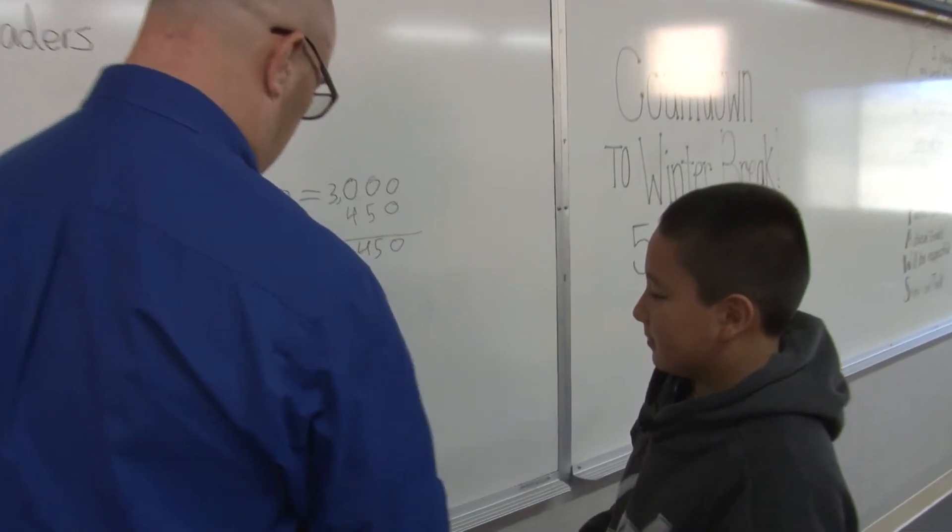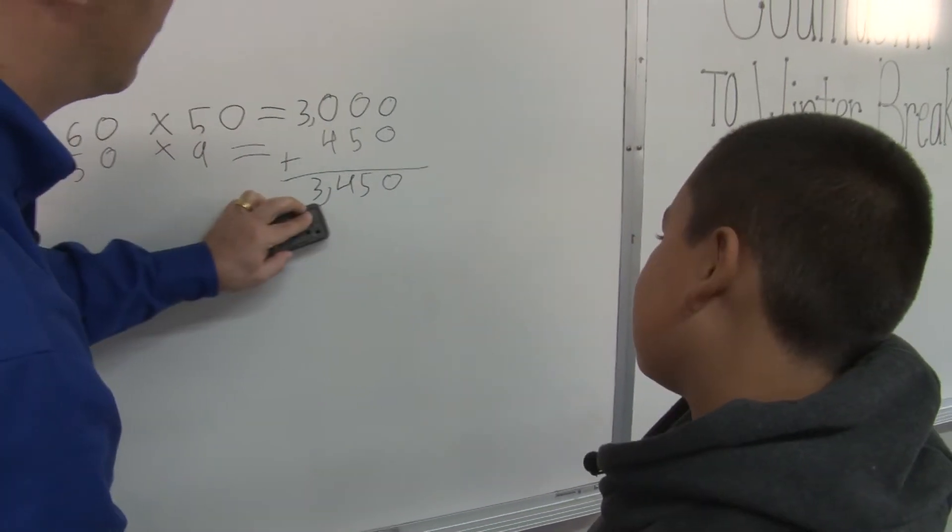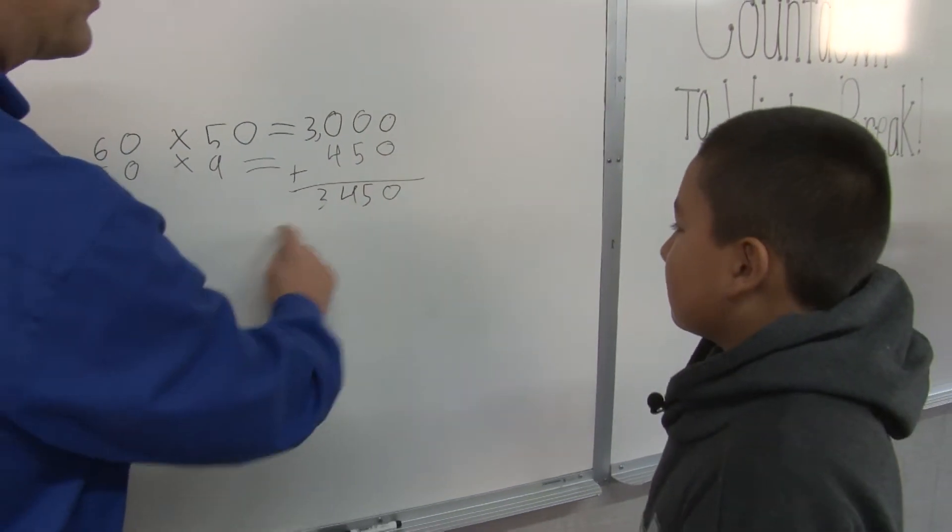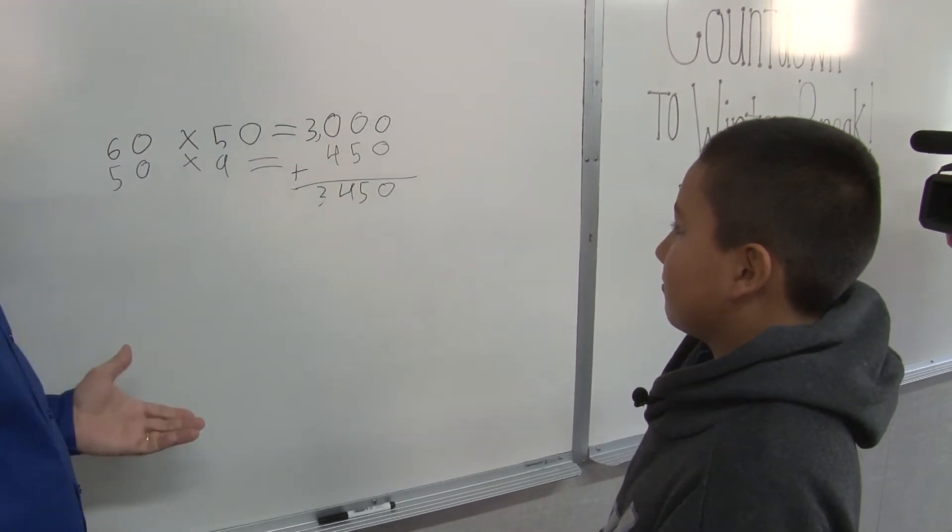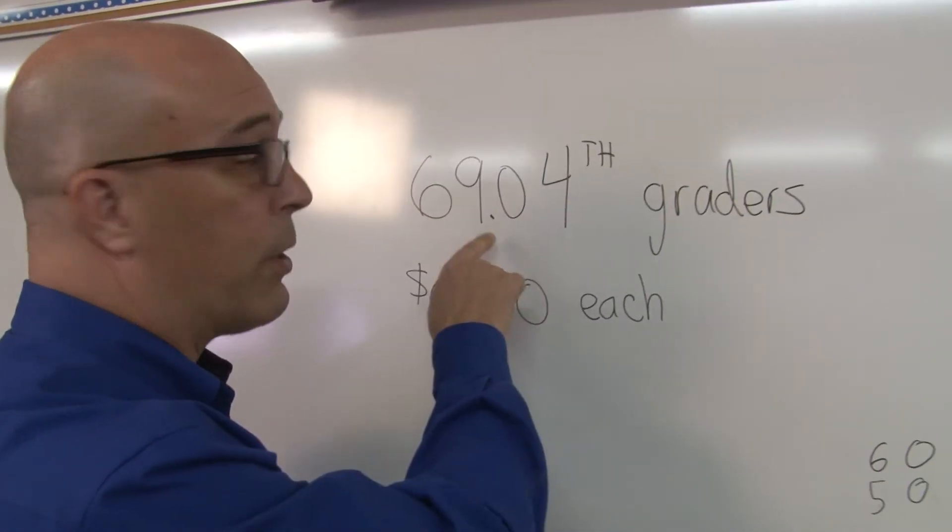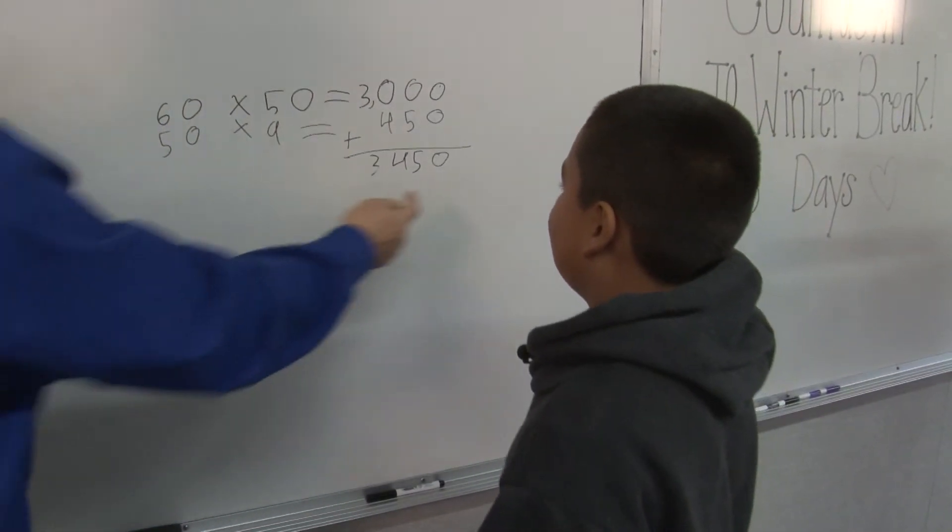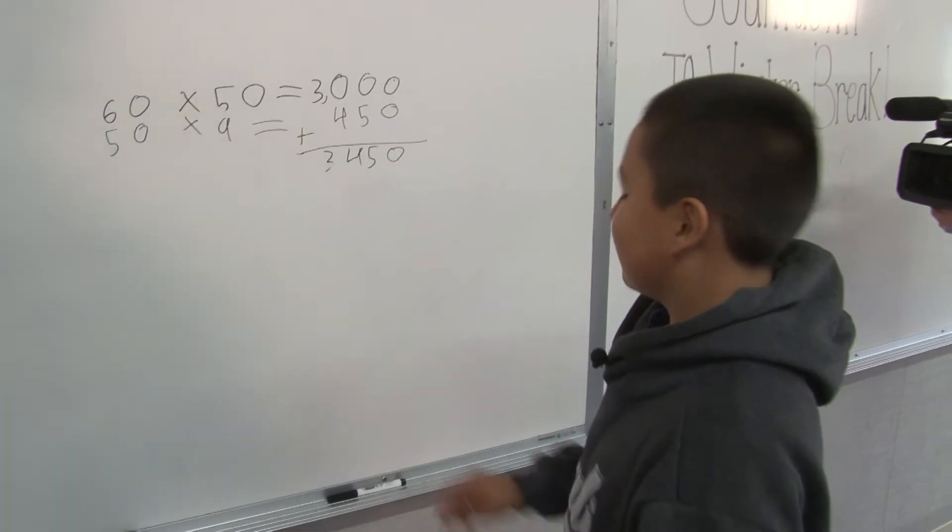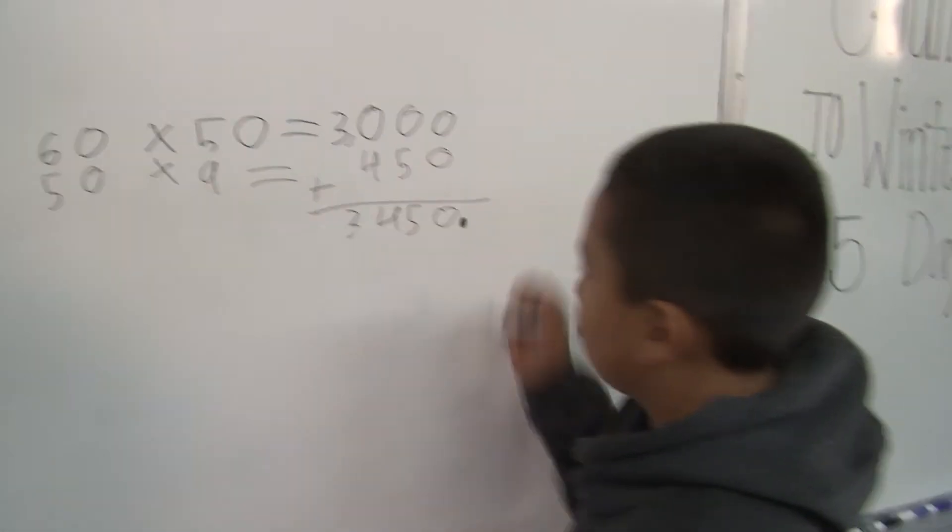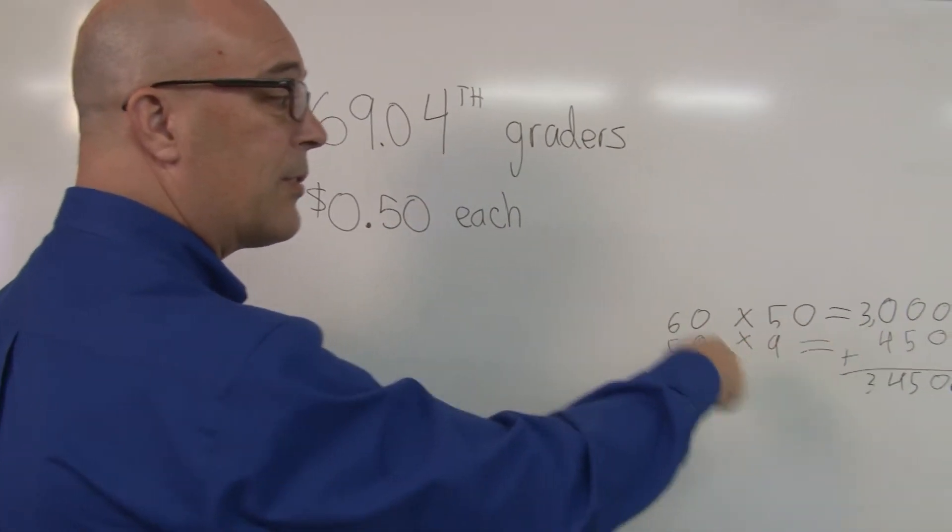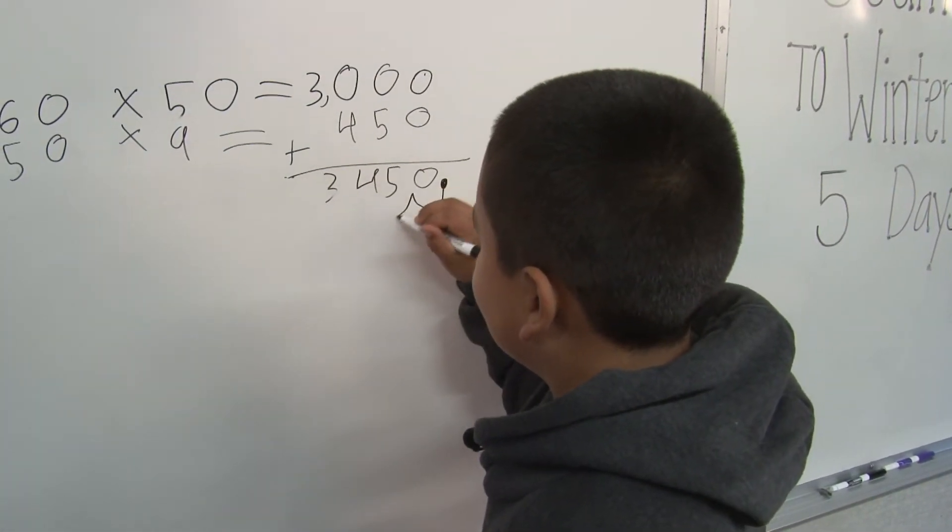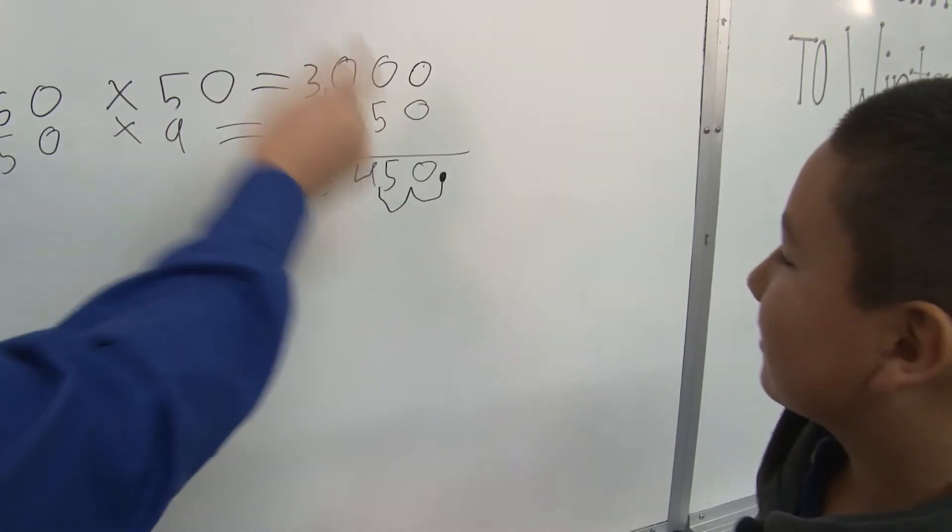So let's take your number, 3,450, and we'll just erase that comma right there for right now, okay? Where is the decimal point here right now? There isn't one. So just like with this, if there is no decimal point, where do we put it? Right at the end, right? So go ahead and put the decimal point there at the end. Just the dot? That's the decimal point. Now we need to move it two places. So move it two places to the right. One, two. One, two. Okay. So now put the decimal point there.